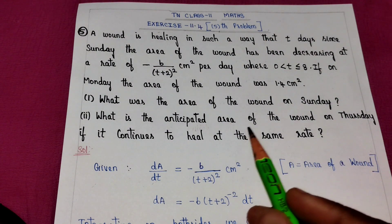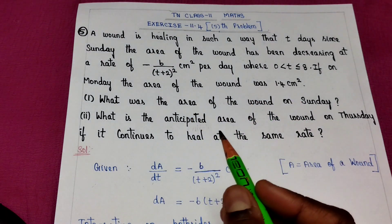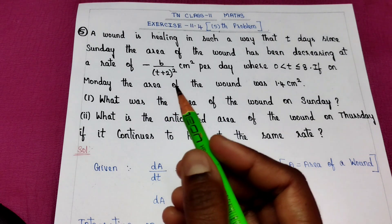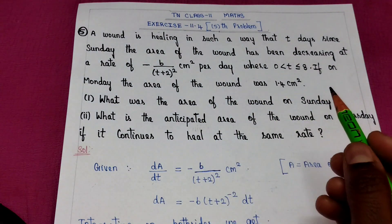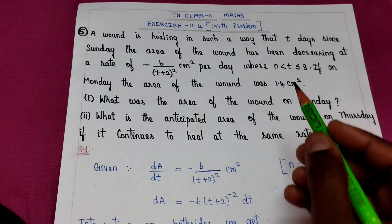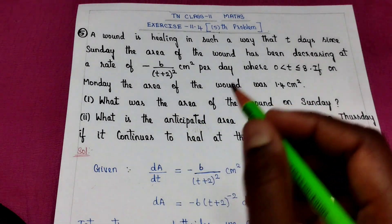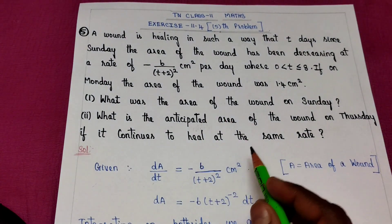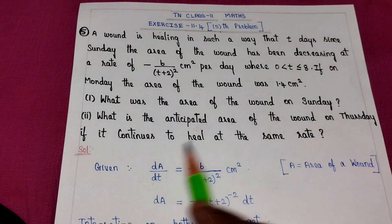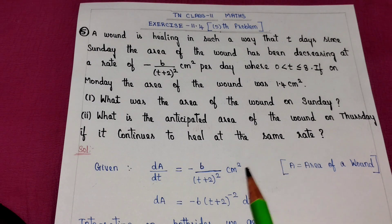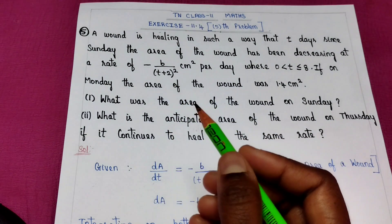The question asks: What was the area of the wound on Sunday? And secondly, what is the anticipated area of the wound on Thursday if it continues to heal at the same rate?